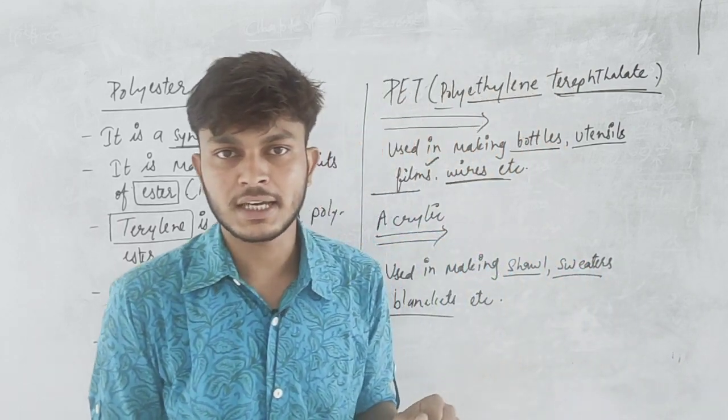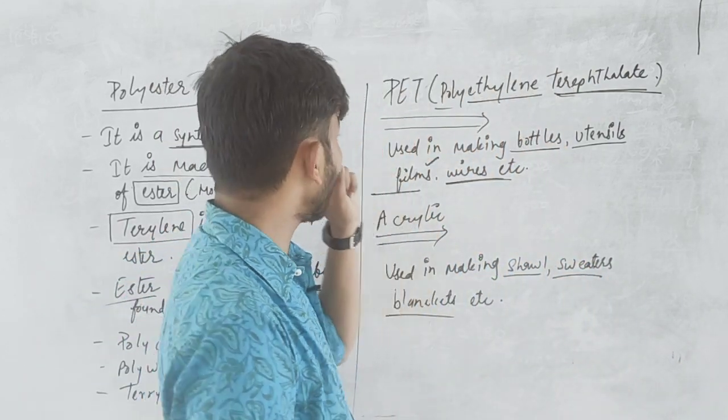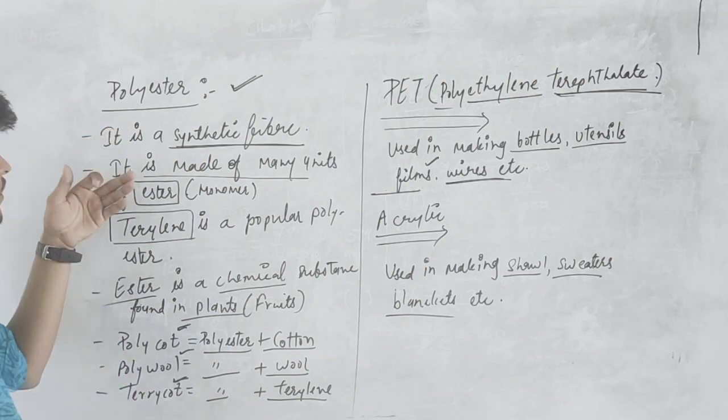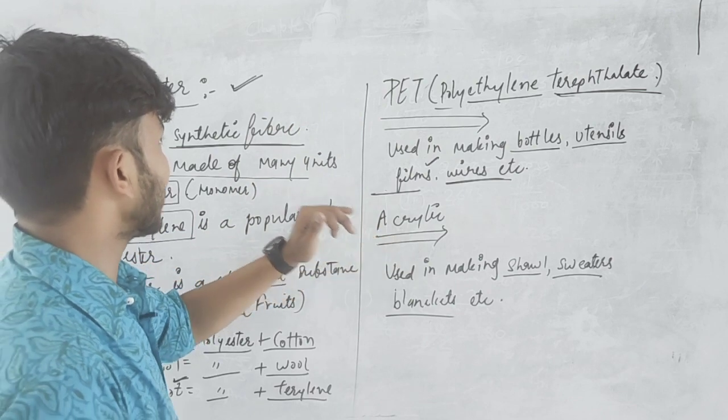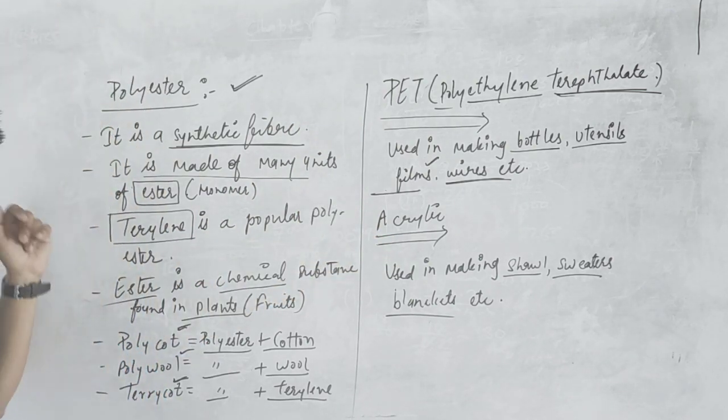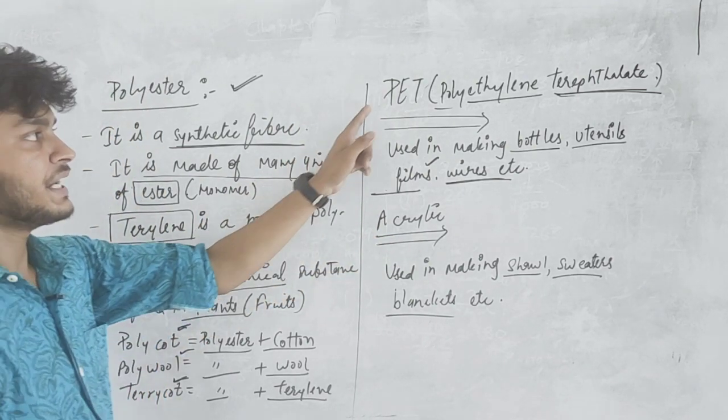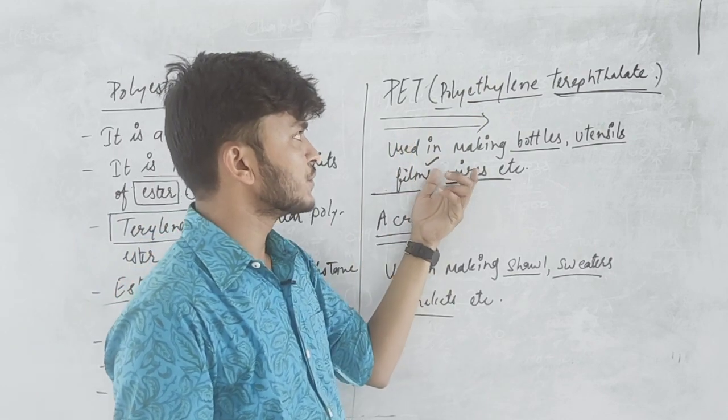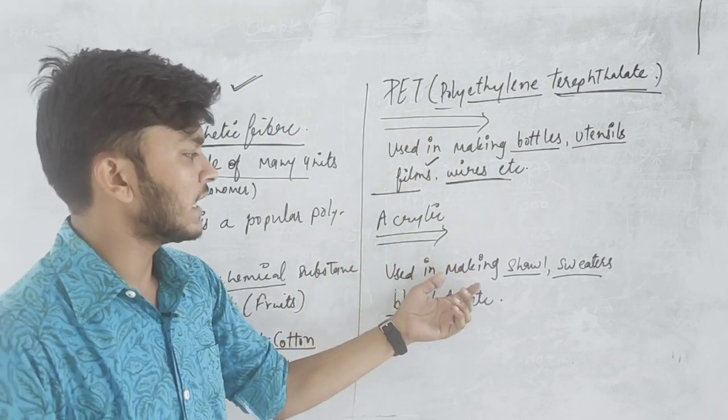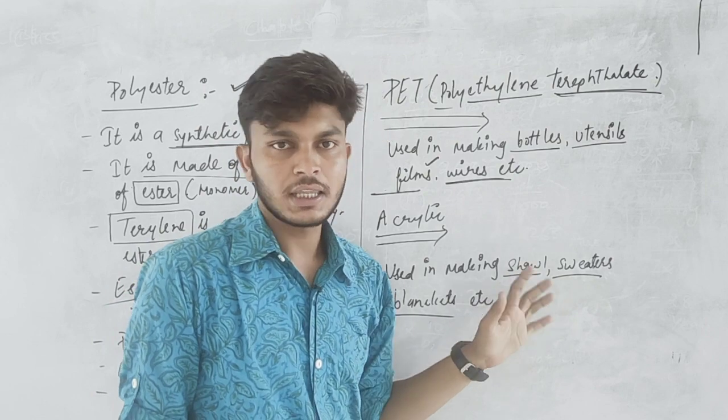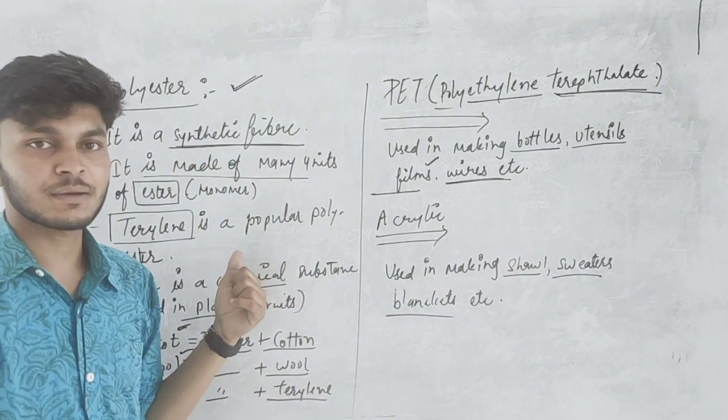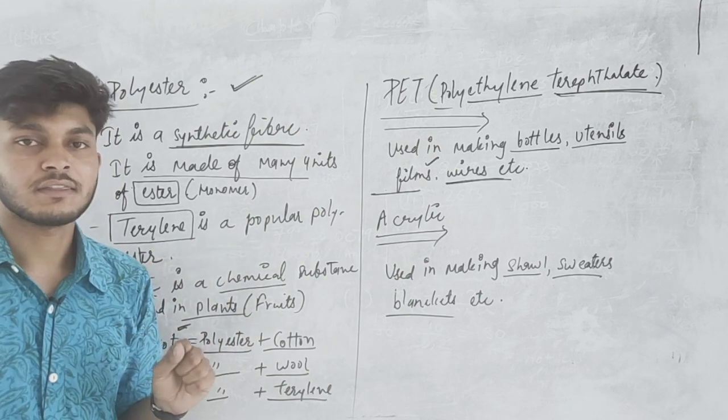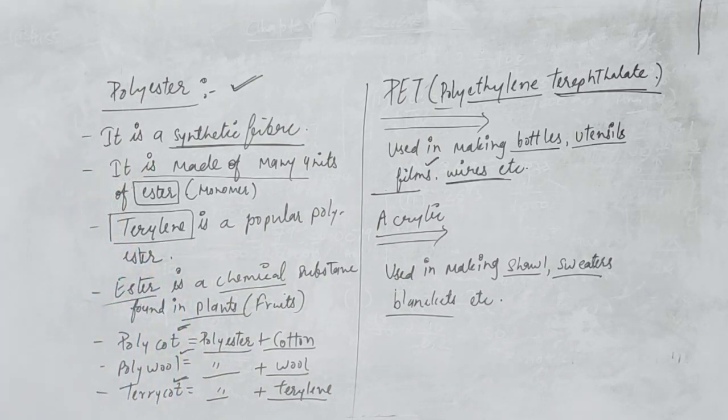Here we have a variety of synthetic fibers - polyester, PET, acrylic. Important: polyester and its examples, PET full form, uses of PET, acrylic uses. That is all. We have talked about synthetic fibers. I hope you have understood this and have a nice day. Thank you.